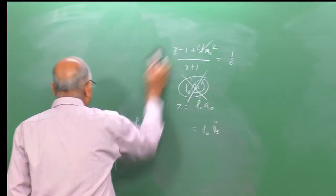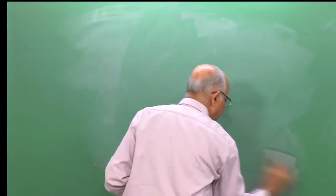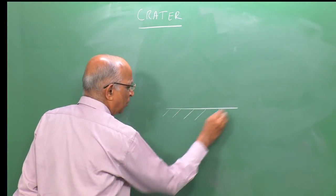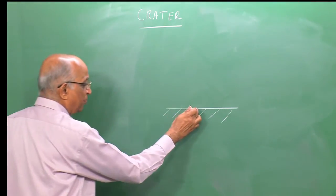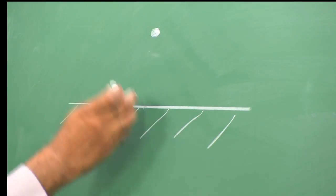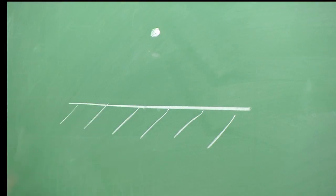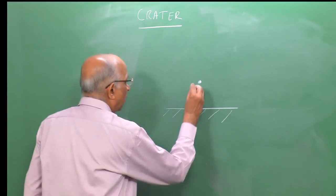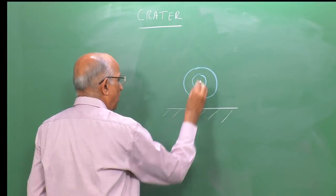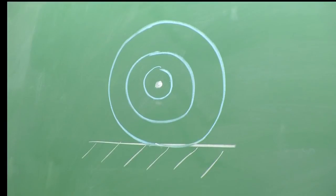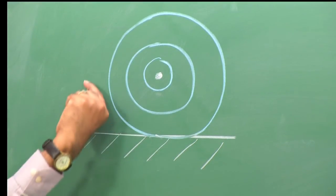Let us revisit crater formation. A crater could be formed on the earth's surface — sandy or rocky soil. Consider the case where an explosion occurs in the air above the surface at some height. As the explosion originates, a wave travels forward and at a later time strikes the ground. The impedance of the earth is higher than that of air, so a shock is transmitted into the ground medium.